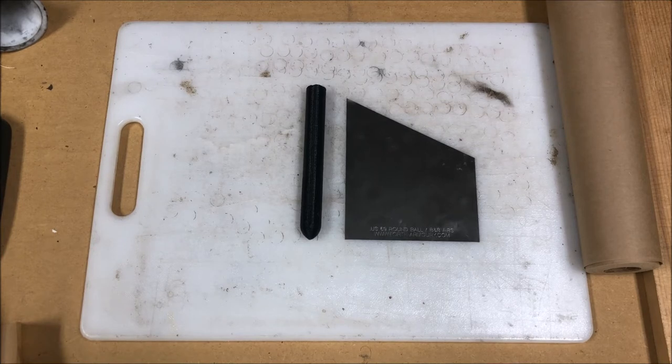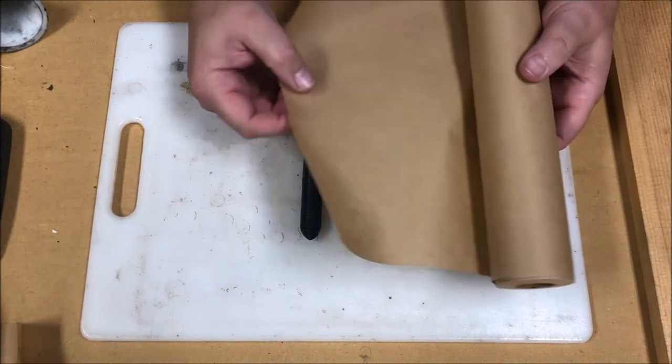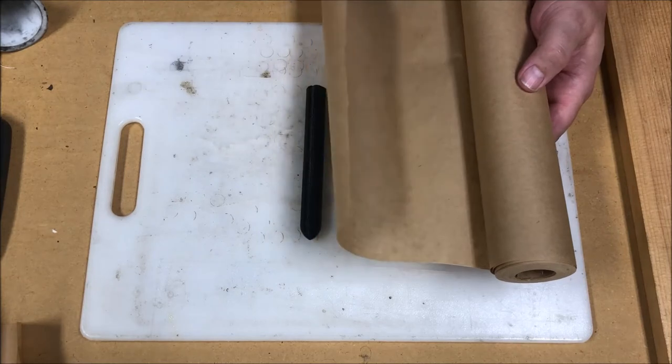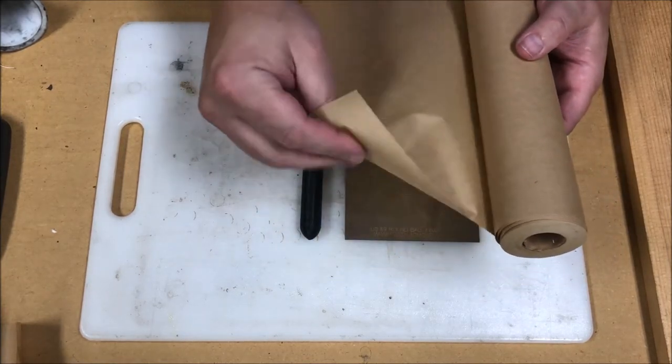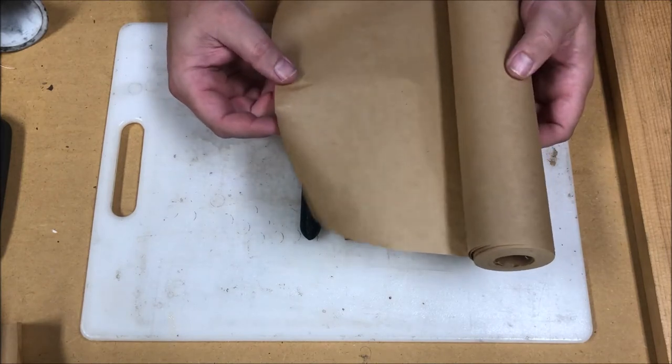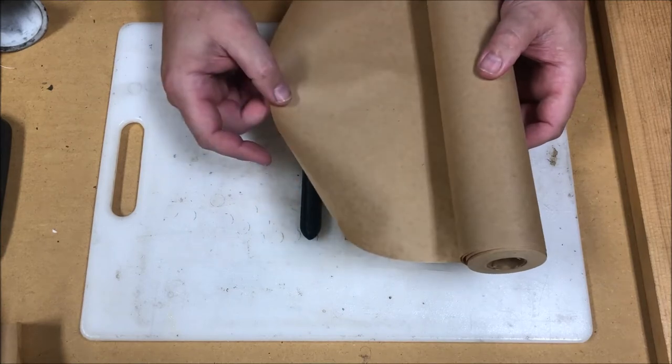So to get started, we're going to need paper. The paper that I like to use is just masking paper that is available at any big box home improvement store. It has the consistency of newsprint and it's just an unbleached plain brown paper and it matches many surviving historical examples of this kind of ammunition.